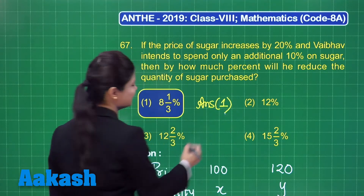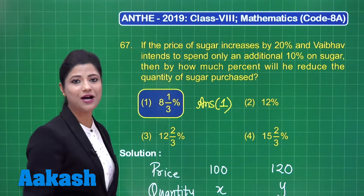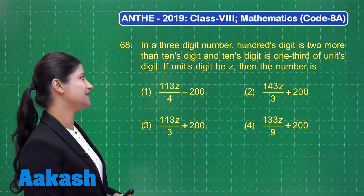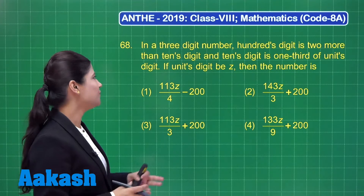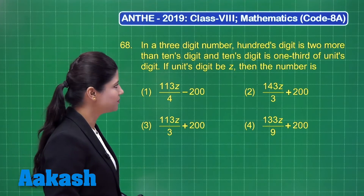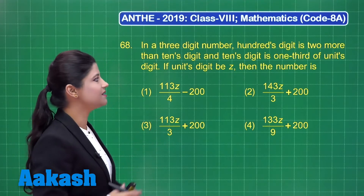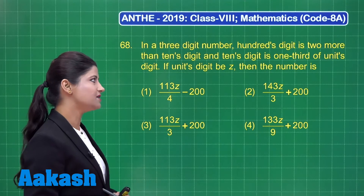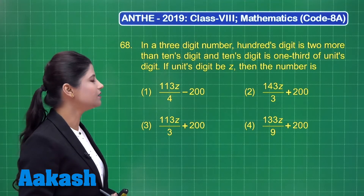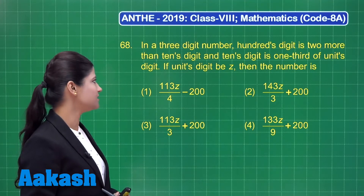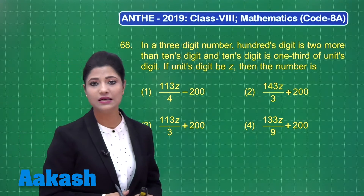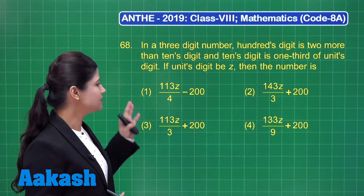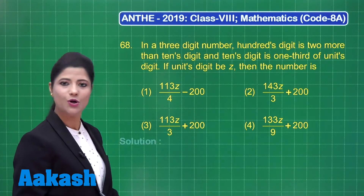I hope it is clear. Let us take up our next question, number 68, which states that in a 3-digit number, the 100th digit is 2 more than the 10th digit, and the 10th digit is 1 third of the units digit. If the units digit is z, then what is the number? Four options are provided.